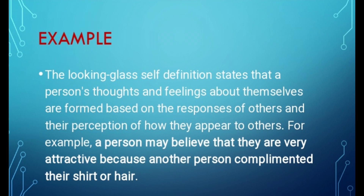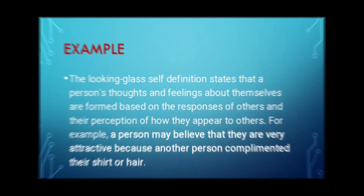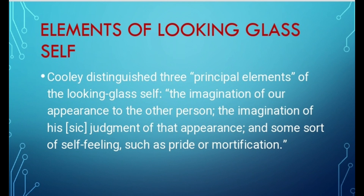For example, a person may believe that they are very attractive because another person complimented their shirt or hair۔ کیونکہ دوسرے person نے اسے compliment کیا — کہ تمہاری shirt تم پر بہت suit کر رہی ہے اور تمہارے hair بہت پیارے ہیں — تو اس سے وہ person perceive کر لے گا کہ میں attractive ہوں۔ جو society نے کہنا ہے — society ہمارا mirror ہے — اگر society کہے کہ آپ اچھے ہیں تو ہم perception بنا لیں گے کہ ہم خوبصورت ہیں، اور اگر society کہے کہ آپ برے لگ رہے ہیں تو ہم perception بنا لیں گے کہ ہم اچھے نہیں ہیں۔